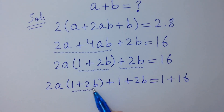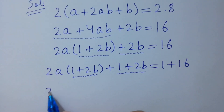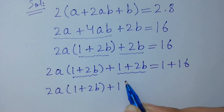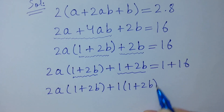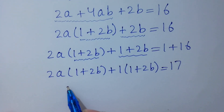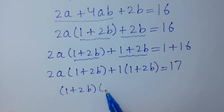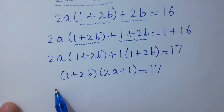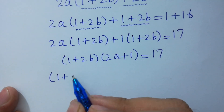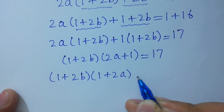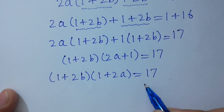Now we can see the common factor (1 plus 2b): factoring gives (1 plus 2b)(1 plus 2a) is equal to 17.